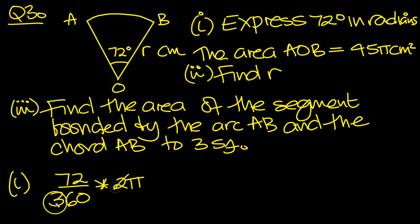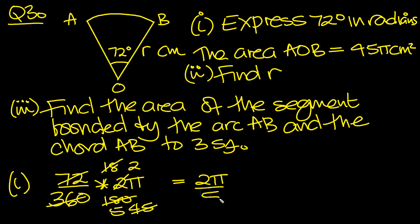So we can cancel by 2, 180. Then another 4, 36, 18. And cancel that by 4, 90 and 45. There's a 9 common. That's two 9s and that's 5. So it's equal to 2 pi over 5.